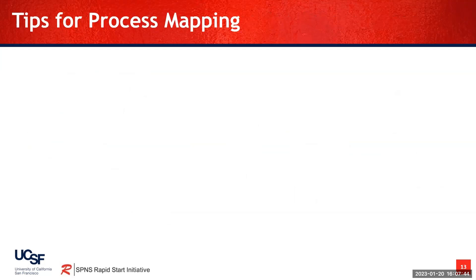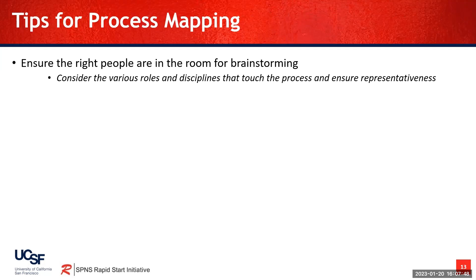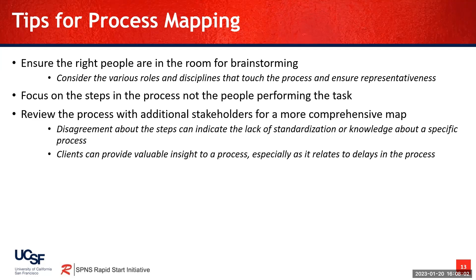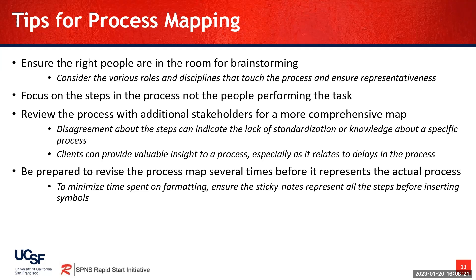Lastly, some tips for process mapping. First, you want to ensure that the right people are in the room for brainstorming — think about the various roles and disciplines that touch the process and ensure representativeness. Focus on the steps in the process, not the people performing the task. Make sure to review the process with additional stakeholders for a more comprehensive map. Disagreement about the steps can actually indicate a lack of standardization or a lack of knowledge about a specific process. Clients or patients can also provide valuable insight to a process, especially as it relates to potential delays. A team should be prepared to revise their process map several times before it represents the actual process map. To minimize time spent on formatting, just ensure that the sticky notes represent all of your steps before thinking about inserting symbols or formatting.